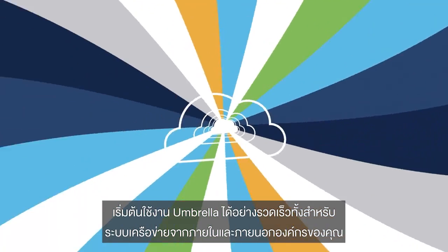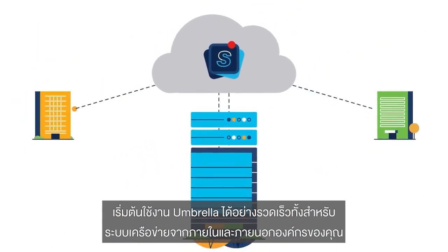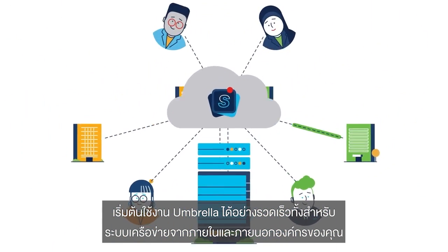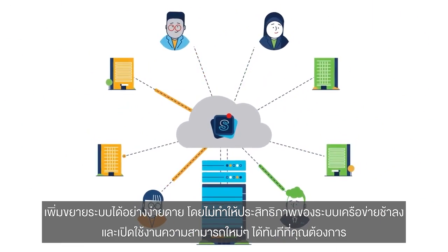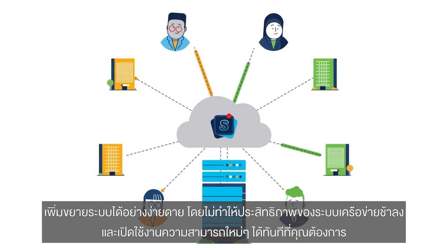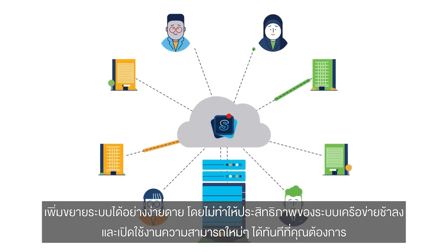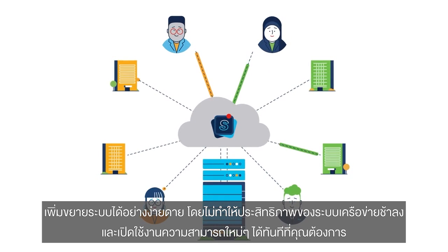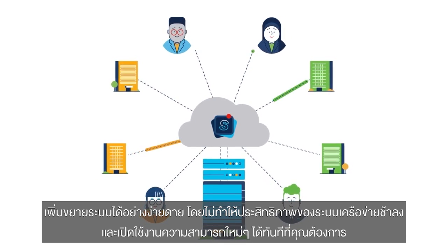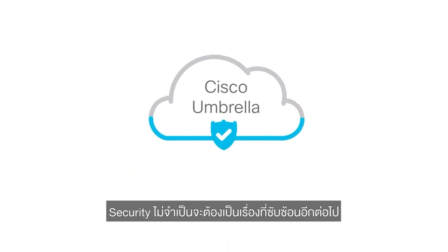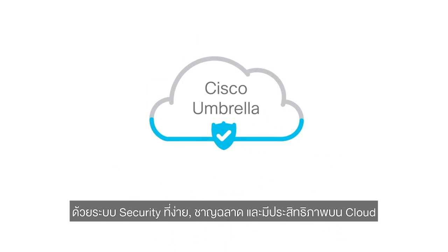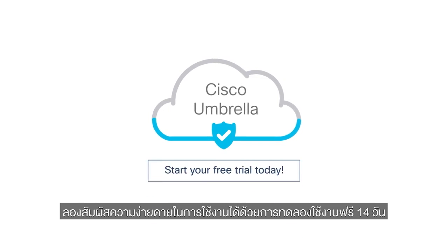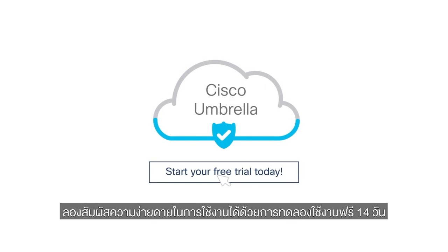Rapidly deploy Umbrella for flexible coverage on and off network. Easily scale as your network expands without slowing performance and add functionality at your own pace. Security doesn't have to be complicated. Get simple, smart, and powerful security from the cloud. See how easy it is to get started with our 14-day free trial.